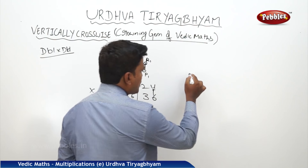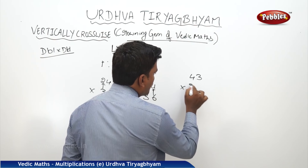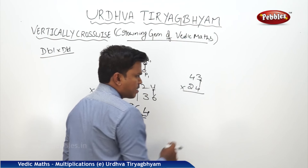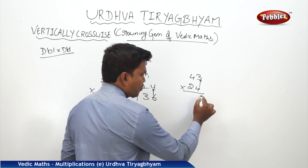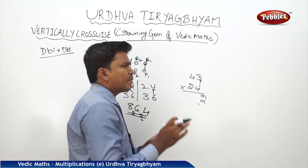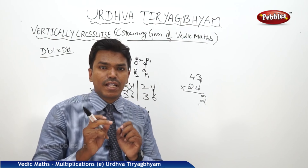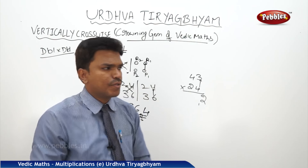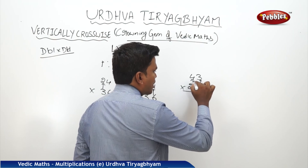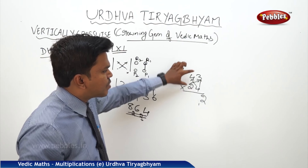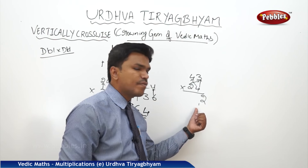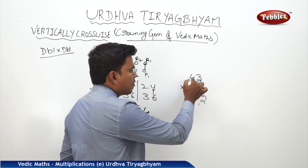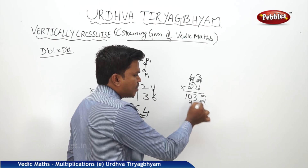Let us take one more example: 43 × 24. Start from the right side. Step one — first to first: 3×4 = 12, drop 2 carry 1. Whatever number you get as an answer, drop the ones place and carry the remaining to the next number. Step two — crosswise: 4×4 = 16, 3×2 = 6; 16 + 6 = 22, plus carry 1 = 23, drop 3 carry 2. Step three: 4×2 = 8, plus carry 2 = 10. Answer: 1032.